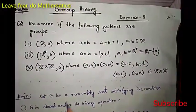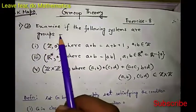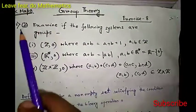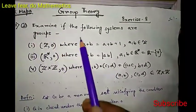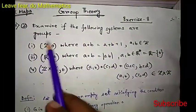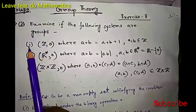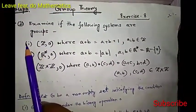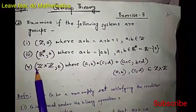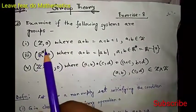So let us see the problem. This is question number 1: Examine if the following systems are groups. We have to examine or check if the following given three systems are groups or not. We have to prove this.